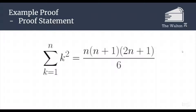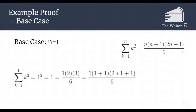To start out this proof, because it is an inductive proof, we are going to start with a base case. Here our base case is going to be n equals 1. So we just need to show that the sum from k equals 1 to 1 of k squared is equal to 1 times 1 plus 1 times 2 times 1 plus 1 all over 6, which is replacing each of the n's in our statement with a 1.